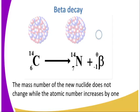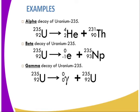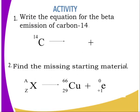Here are examples of alpha, beta, and gamma decay. Uranium-235, atomic number 92, undergoes alpha decay to give thorium with atomic number 90 and mass number 231. Beta decay of uranium yields a new nuclide whose mass number does not change but atomic number increases by one. Gamma decay of uranium yields a nuclide with the same composition, because there is no change in mass number or atomic number.